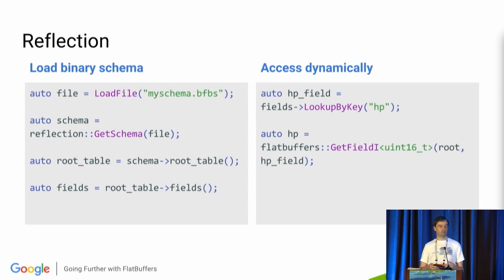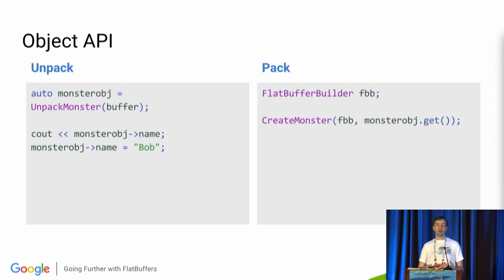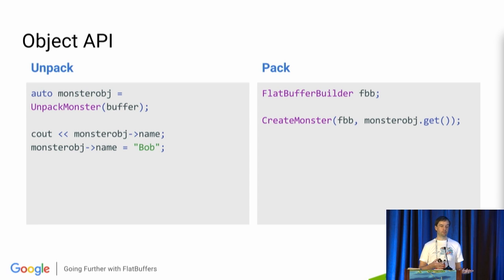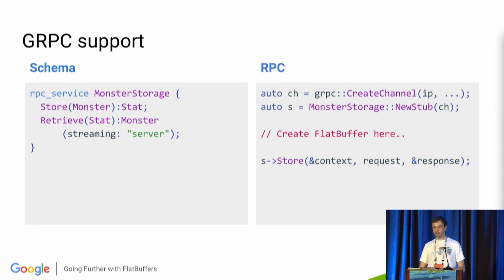We also have a traditional object API. There are times when a classical object tree is the best representation for your data and none of the previous methods are sufficient. In that case, FlatBuffers can generate code for you to turn these buffers into idiomatic C++. It's not as fast as using buffers in place, but if you happen to need it, it's better than writing it all by hand. And now for something completely different.